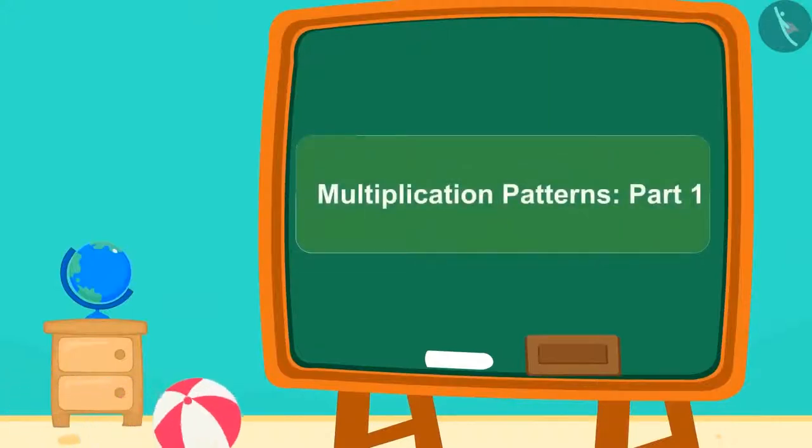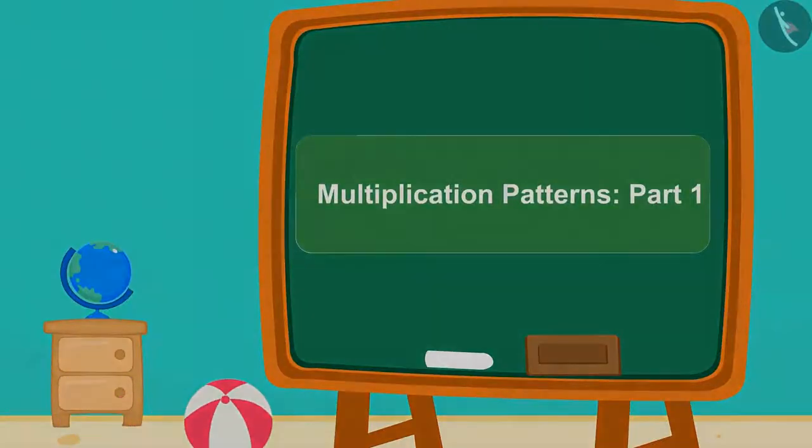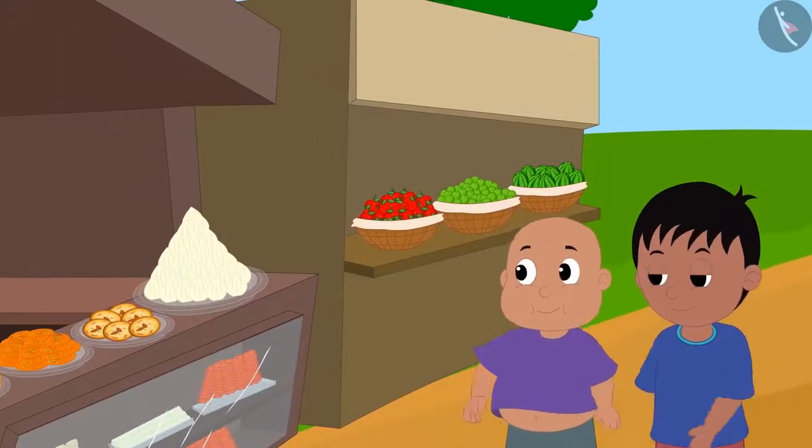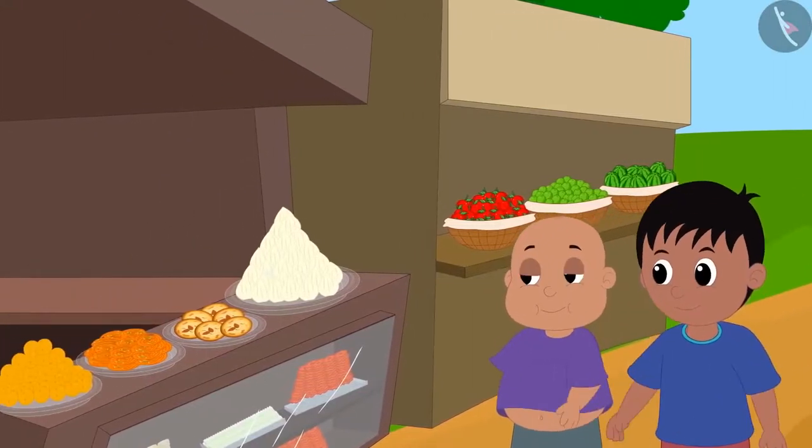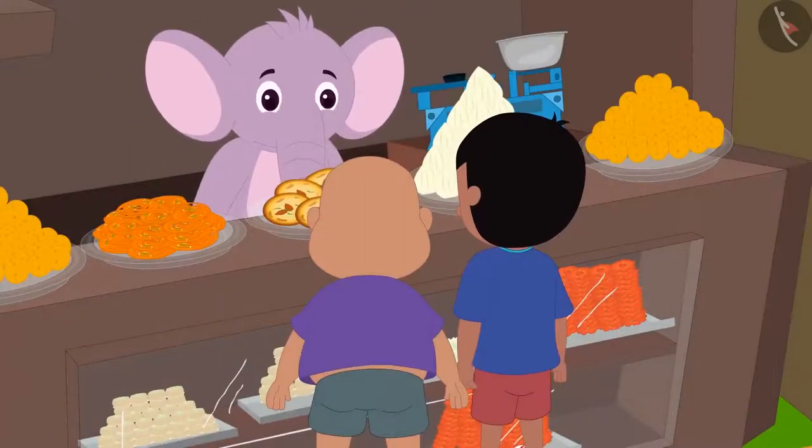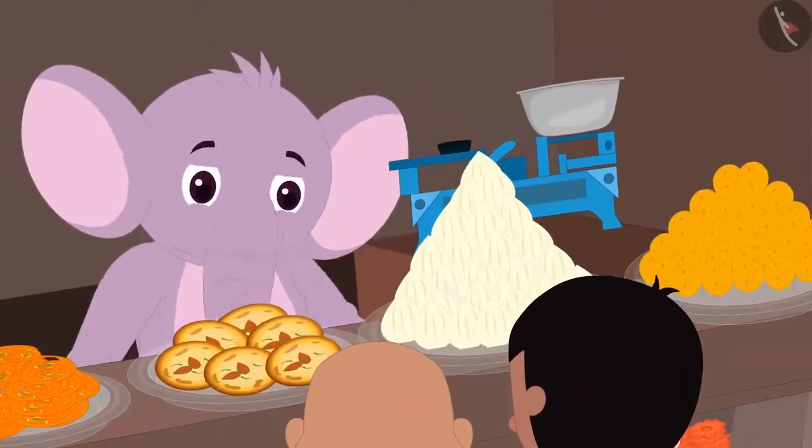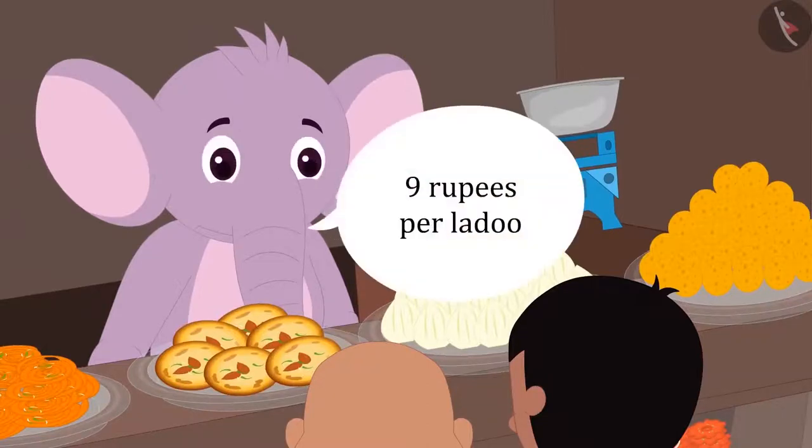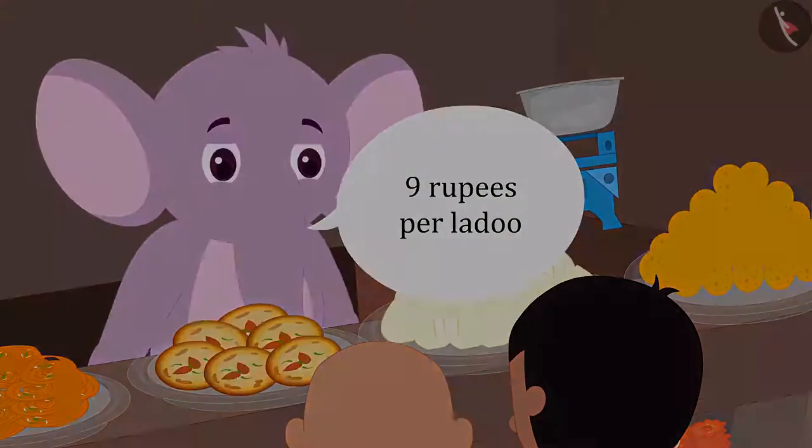We will see some fun patterns of multiplication. Raju and Bablu are roaming in the market. Raju asks Appu the price of laddu. Appu told Raju that the price of laddu is 9 rupees per laddu.